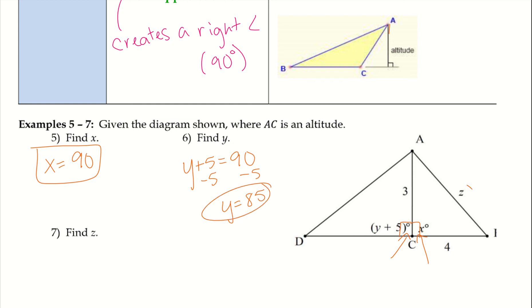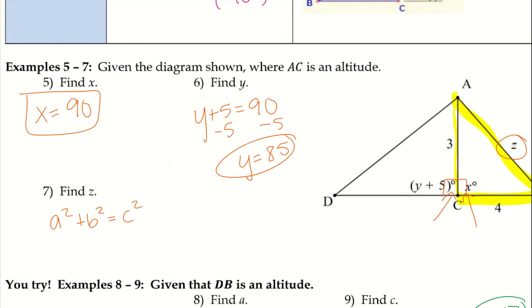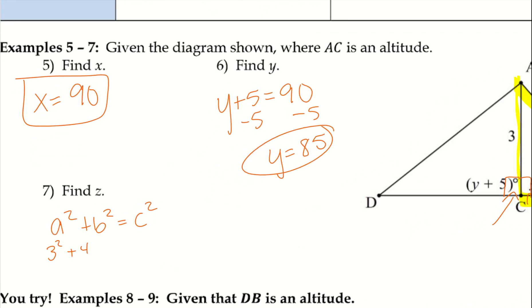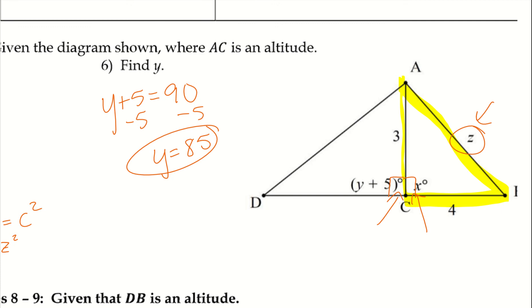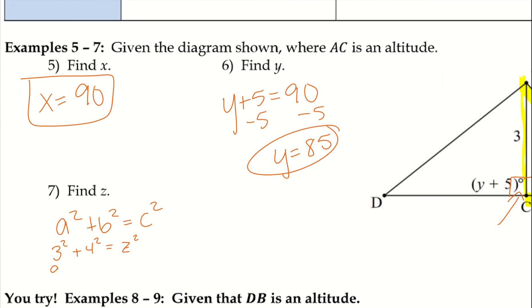Then we want to find z over here. If we take a look, since we do have this right triangle, we can use the Pythagorean theorem. So a squared plus b squared equals c squared, and c is the hypotenuse. So z right now is our hypotenuse, so I'm going to go ahead and plug in the values. We have 3 squared plus 4 squared equals z squared. I now have 9 plus 16 equals z squared. I'm going to add those together and get 25 equals z squared. In order to get my z, I'm going to take the square root of both sides to get 5 equals z.